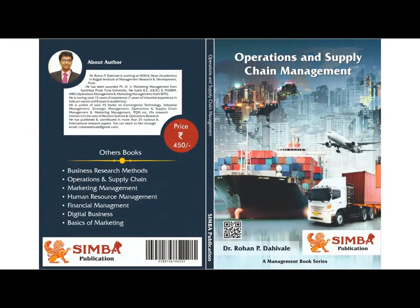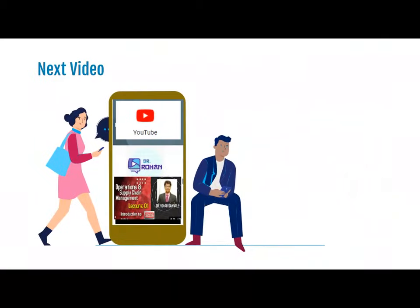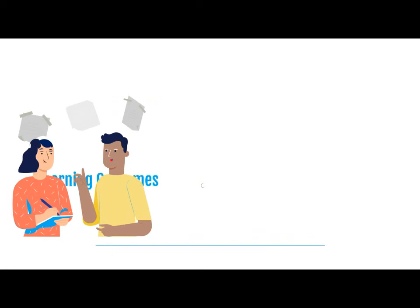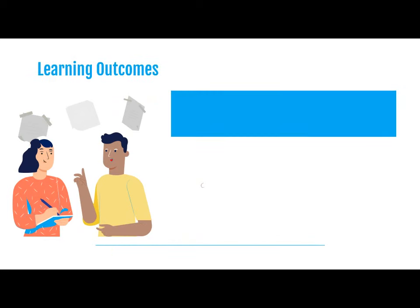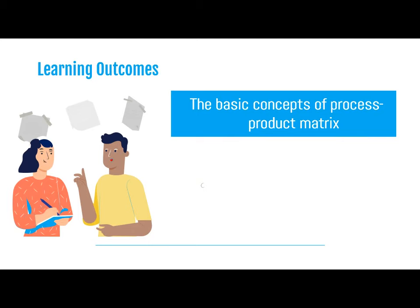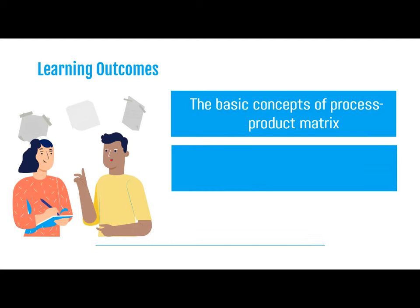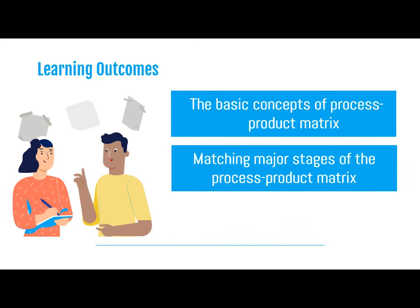This is the book Operations and Supply Chain Management from Simba Publications. In the next video, we will understand the job production concept. As the learning outcomes from today's session, we have understood the basic concept of process-product matrix and we have seen the matching major stages of the process-product matrix.